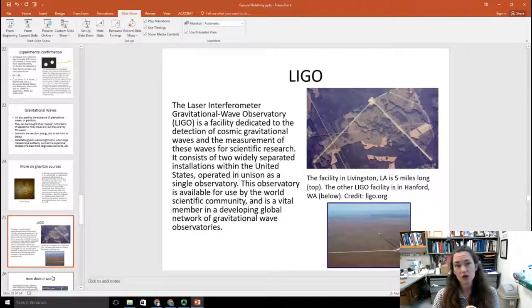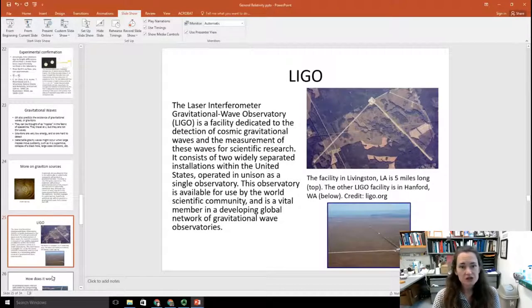How do we detect gravity waves? Well, we do it through national labs like this one, LIGO. The Laser Interferometer Gravitational Wave Observatory, or LIGO for short. And that's a facility, or a couple of facilities, dedicated to the detection of cosmic gravitational waves and the measurement of those waves for scientific research. There's actually two facilities, widely separated installations within the United States, and they're operated in unison as a single laboratory. So these observatories are available for use by the world's scientific community, and it's a vital member of a network of such facilities.